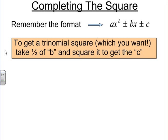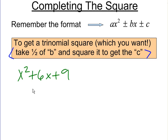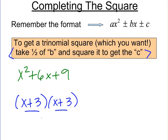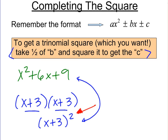The way we do that is by taking half of the b, then squaring it to get to the c. A perfect square trinomial, when factored, produces two identical binomials — that's why it's called a trinomial square. That's what we want to get. If we can get it that way, we can use the idea of completing the square and then solving by square roots.